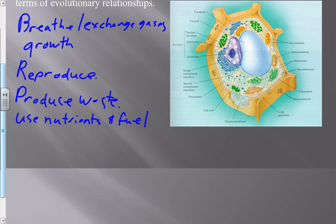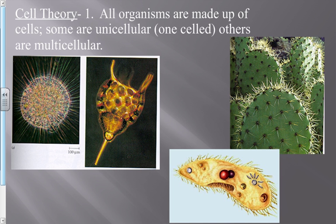So fire is a living thing? Fire grows, fire breathes and exchanges gases, fire reproduces, produces waste, uses nutrients and fuel — but fire is not alive. Fire is a chemical reaction. Why does it fit all the criteria you gave? What's the one thing that separates fire from all living things? What do living things have that fire doesn't? Cells. There is not a single organism on earth that does not have cells — all living things have cells. That's the first point of the cell theory.